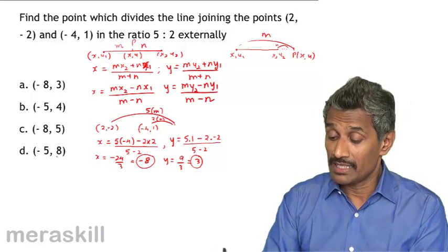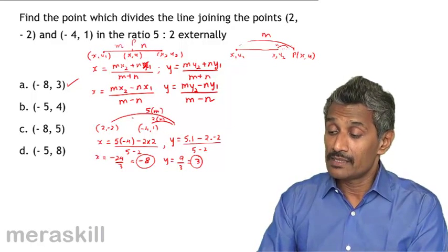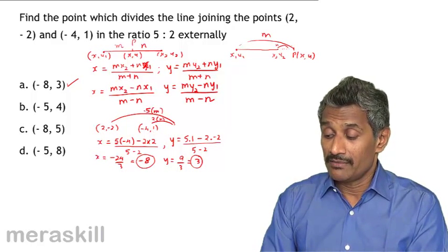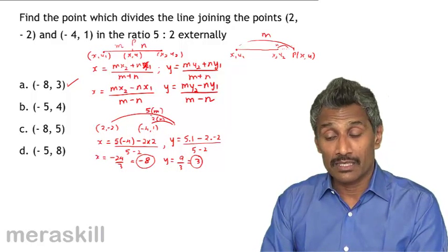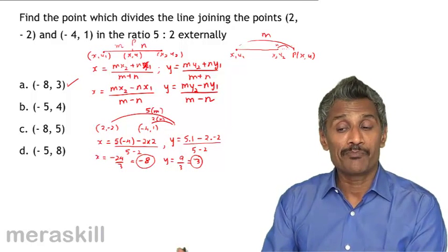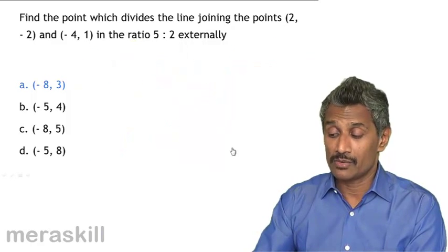So that means among these, this is the point that divides this particular segment joining (2, -2) and (-4, 1). It divides it externally in the ratio 5:2, and the coordinates of that point are (-8, 3). And hence, the option involved is (-8, 3), and yes, that is the way.